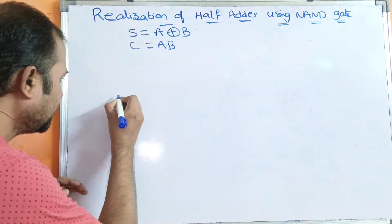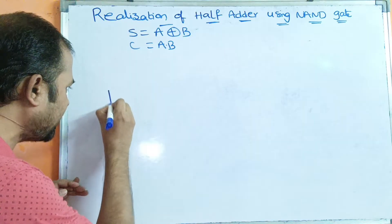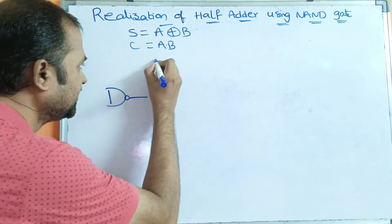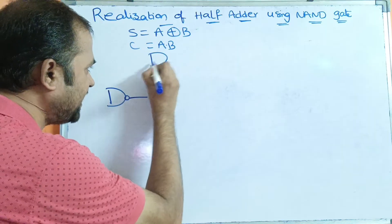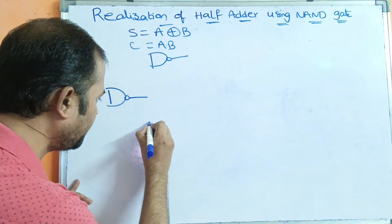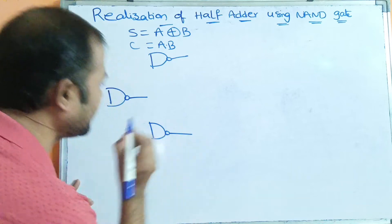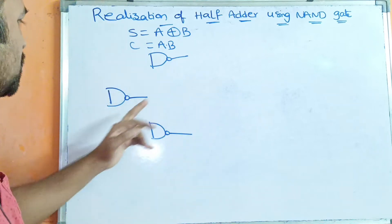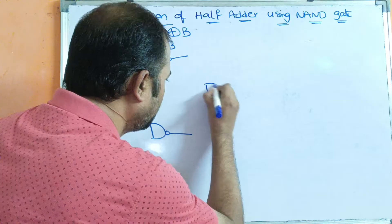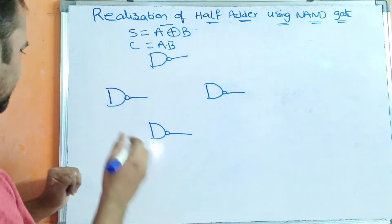Here, we require totally four NAND gates for the sum operation, arranged in a specific structure. This is the first NAND gate, and this is the second NAND gate. We require a structure like this with four NAND gates.